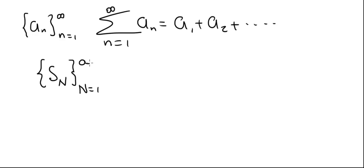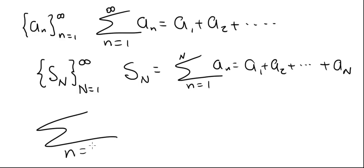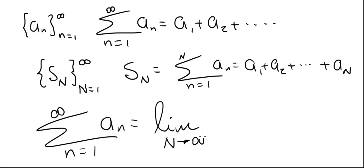S sub N, from 1 to infinity, is equal to the summation from small n equals 1 to capital N of a sub n — that is a1 plus a2 all the way up to a sub N. The series is then defined as the limit as big N goes to infinity of the sequence of nth partial sums. If this limit exists, the series converges to that limit; if the limit doesn't exist, the series diverges.